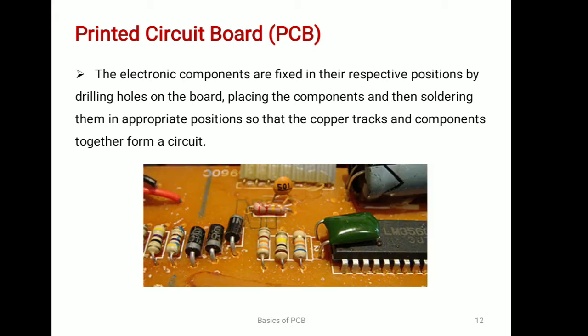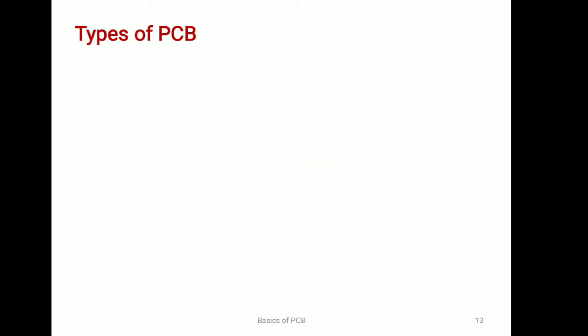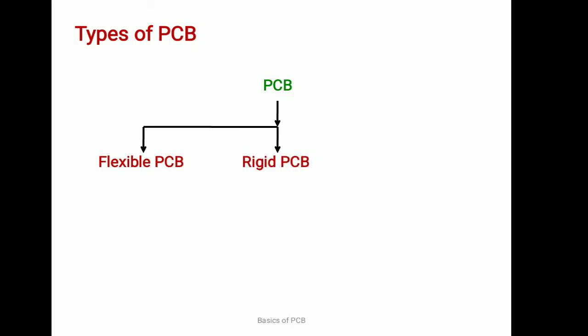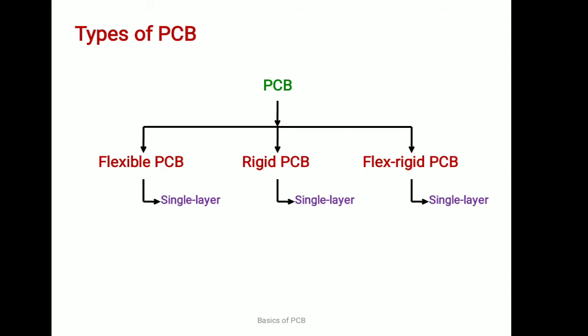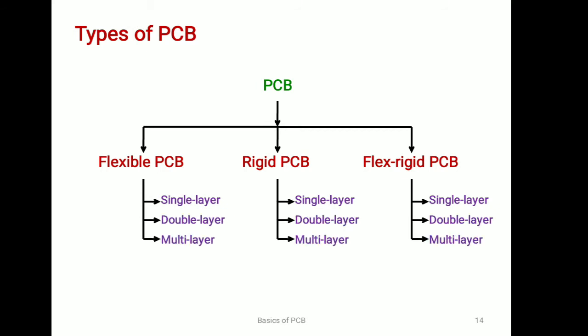PCBs are used in all electronic circuits. According to the base material, PCBs are classified in three categories: flexible PCBs, rigid PCBs and flex-rigid PCBs. Each one of these types is further classified as single layer, double layer and multi layer type. Let us see each one in detail.